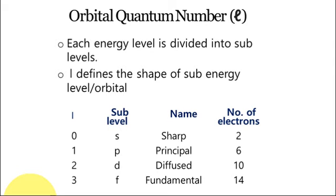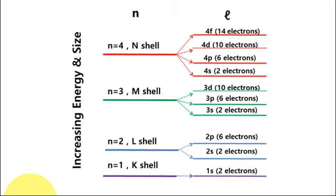As shown in the table, L equals 0, 1, 2, 3. The values of L range from 0 to n minus 1. These correspond to S, P, D, F orbitals. S has 2 electrons, P has 6 electrons, D has 10 electrons, and F has 14 electrons.